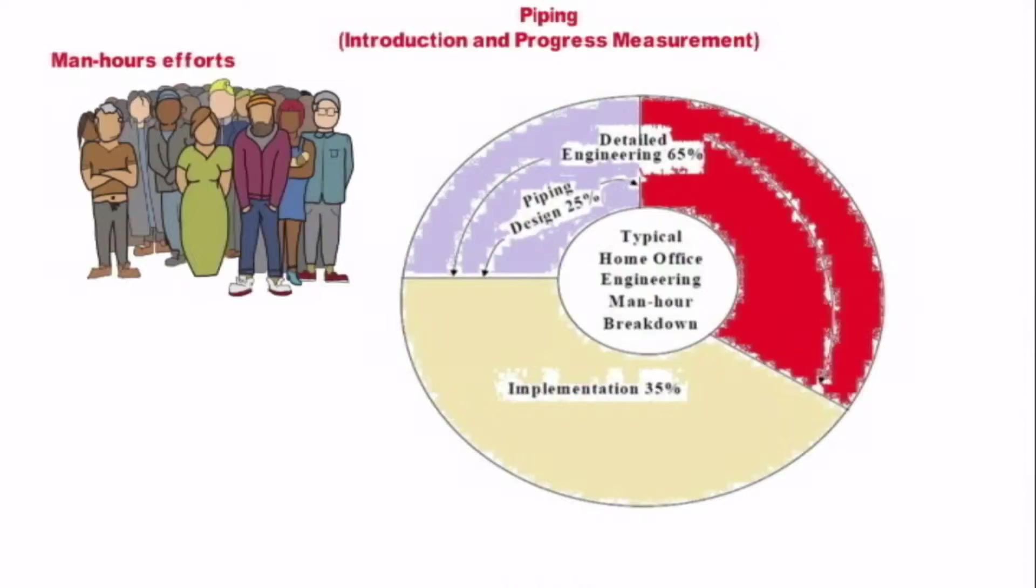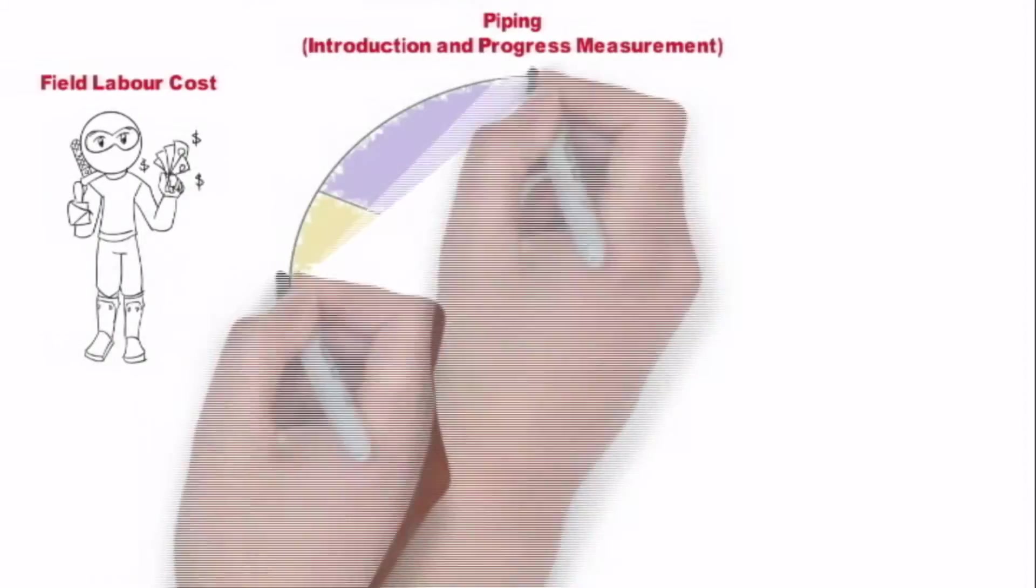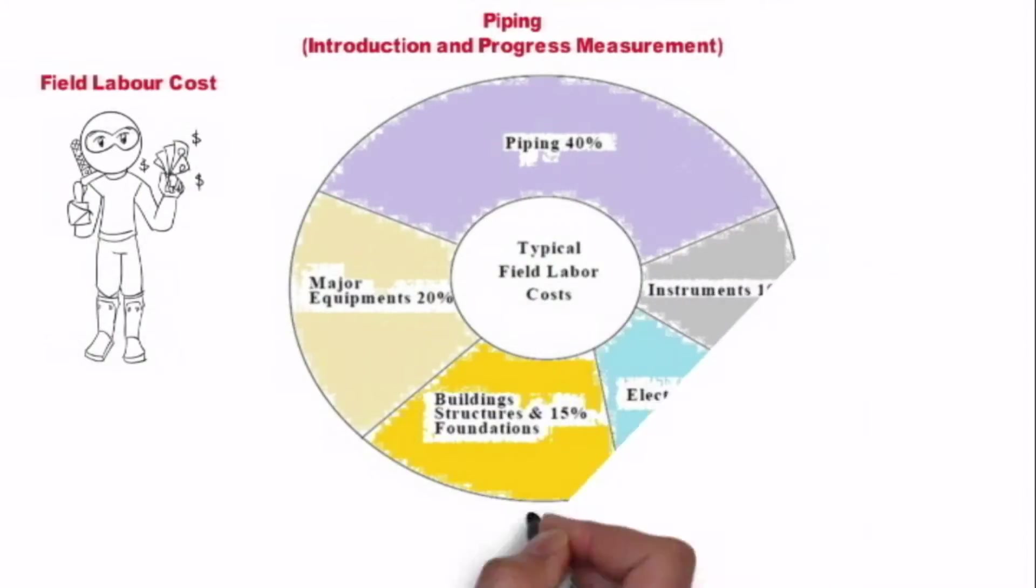The balance 40 percent accounts for civil, mechanical, electrical and instrument engineering combined. Similarly, if we talk about field labor cost, piping asks for maximum share which is 40 percent of total field labor cost. We can see in this pie chart.